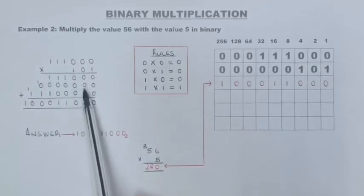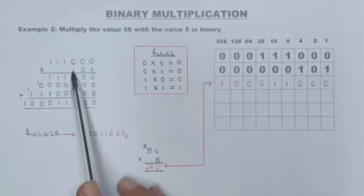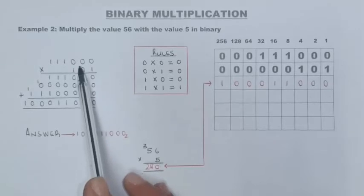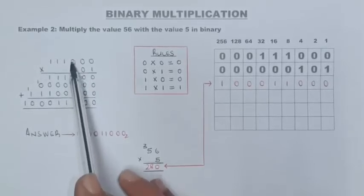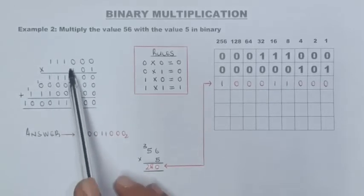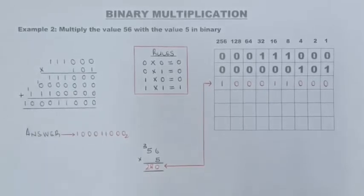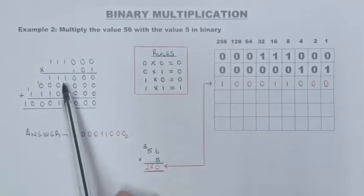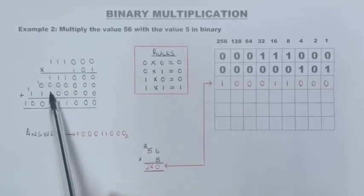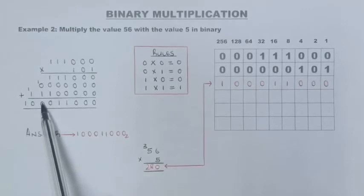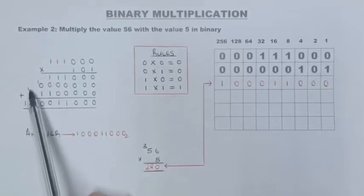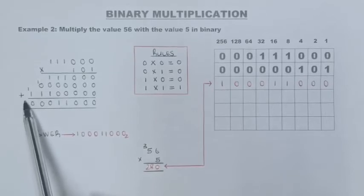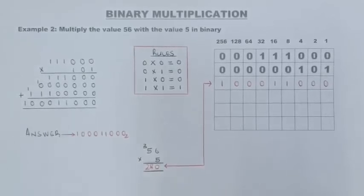Next, I'm in the third column so I put two placeholders because I'm starting with the third digit. One times zero is zero. One times zero is zero. One times zero is zero. One times one is one. One times one is one. One times one is one. Now adding: zero, zero, zero, one plus zero is one, one plus zero is one, one plus one is zero carry one, one plus one is zero carry one, one plus one is zero carry one, giving the final answer for this multiplication.